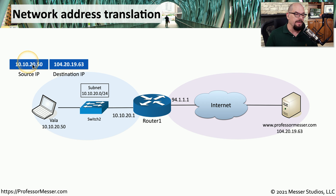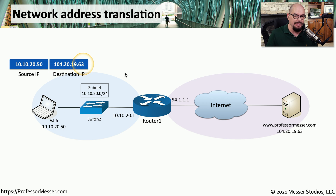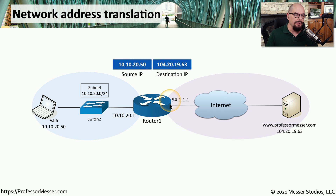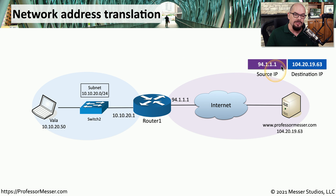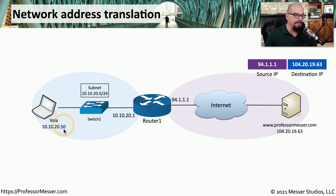VALA will send an IP packet to the Professor Messer website, where the source address is VALA's IP of 10.10.20.50, and she's sending this message to 104.20.19.63, which matches the public IP address on professormesser.com. When this packet is sent to the local router, the router recognizes that a private IP address is in use and translates that IP address to a public IP address that has been previously configured inside of that router. It then sends the rest of that information to the destination IP — this becomes especially important when we need to send information back to VALA.